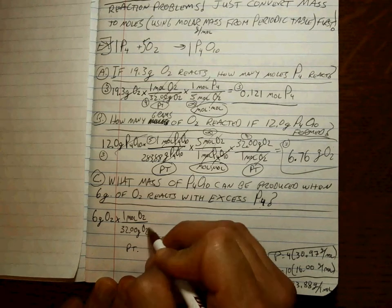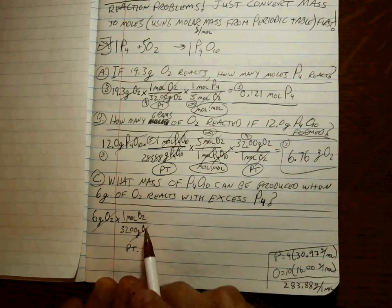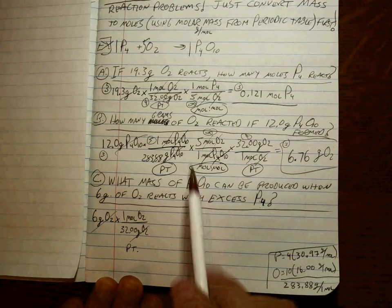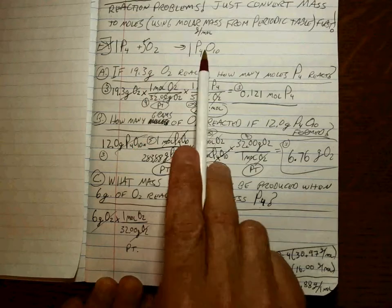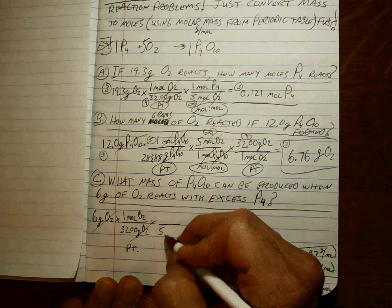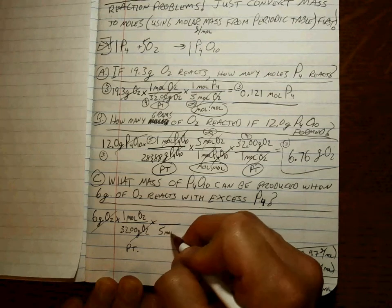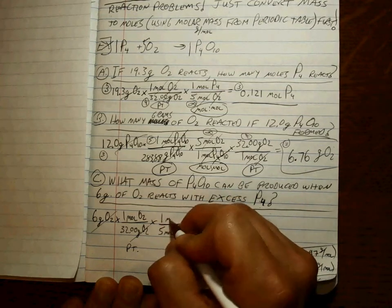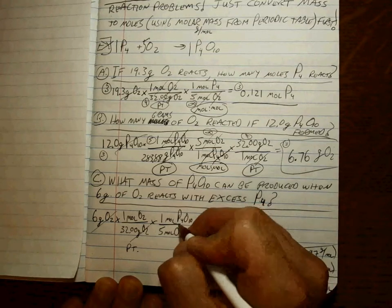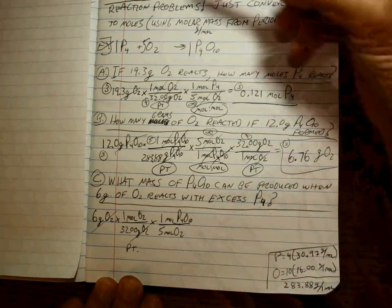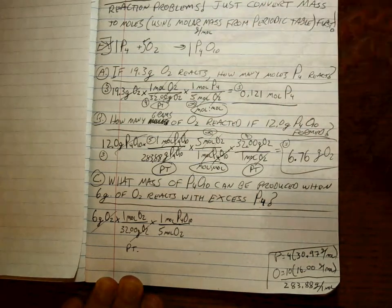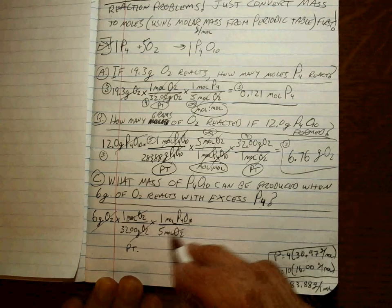Okay. Well, we start with the O2 grams. We're going to convert to moles again. Same as we did up here. Periodic table step. Molar mass. Get to moles of O2. They want to know the mass of P4O10. Well, we have to compare the moles first. What's that ratio? It's five moles of O2 for every one mole P4O10. The five comes from the balanced equation, and the one comes from the balanced equation. Moles cancel.